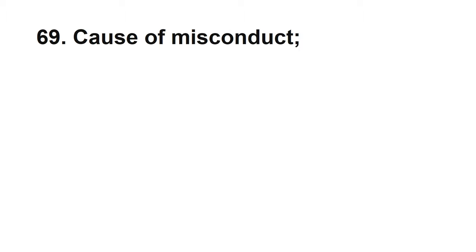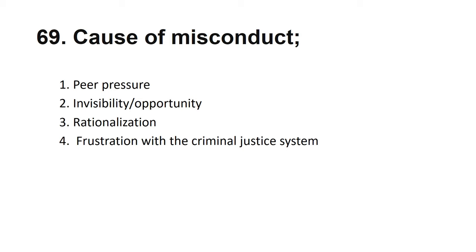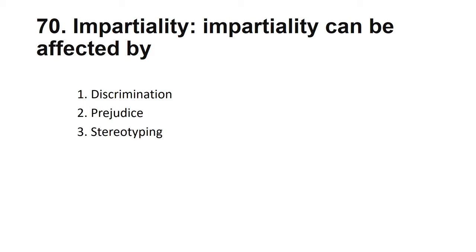Causes of misconduct: peer pressure — friends can pressure someone into unlawful activities; invisibility or opportunity — if no one is watching, they may take the opportunity to misbehave; rationalization — they plan and act intentionally; and frustration with the criminal justice system. Impartiality can be affected by discrimination, prejudice, stereotyping, and attitude. Your attitude is the most important factor.